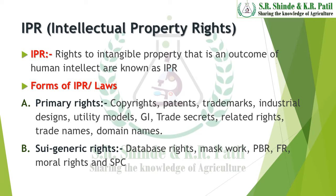Some forms of IPR are primary rights and sui generis rights. Under primary rights: copyrights, patents, trademarks, industrial designs, utility models, geographical indices, trade secrets, related rights, trade names, and domain names. Under sui generis rights: database rights, mass work, PBR i.e. Plant Breeders Right, Farmers Right, Moral Rights, and Supplementary Protection Certificate.